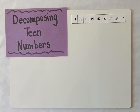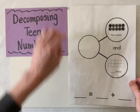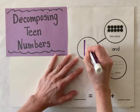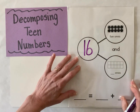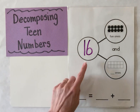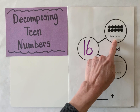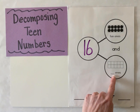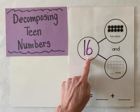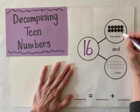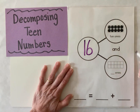Now let's do it a different way. We're going to decompose the teen number 16 using a number bond. I'm going to write the number 16 here, and now we're going to break that number 16 into two different parts. The first part is my 10 ones, and my second part is my more ones. How many more ones do we need to make a total of 16? Let's do the same thing we did with our 10 frames and count on to see how many more we need to build 16.